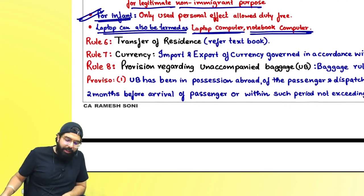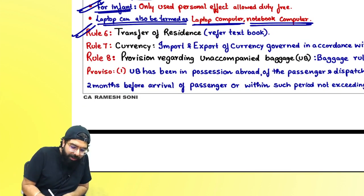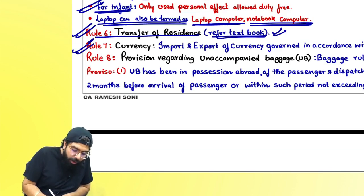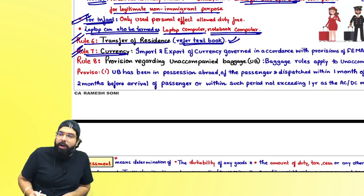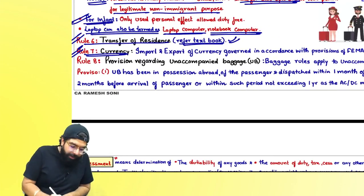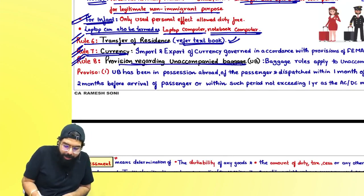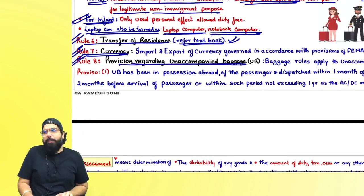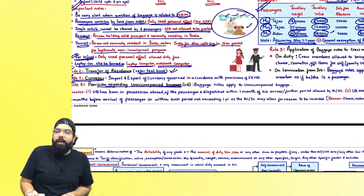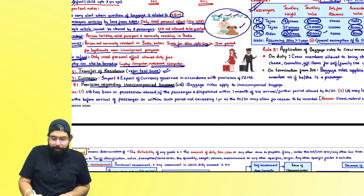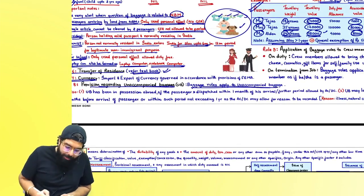Rule 6 deals with transfer of residence — refer to your textbook. Rule 7: currency must always be handled as per FEMA. Rule 8 covers unaccompanied baggage — baggage rules are applicable to unaccompanied baggage also.